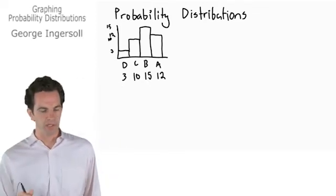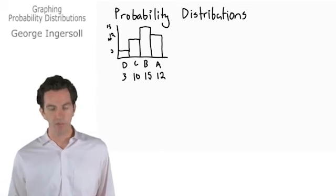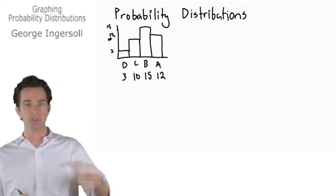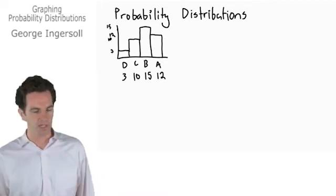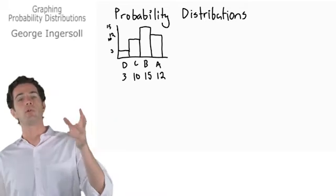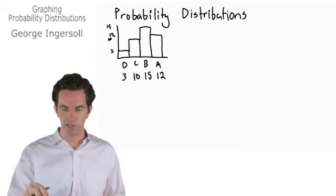For our probability distribution, we wouldn't use the actual numbers that we obtained, we would use the probability. Instead of saying this is exactly how many students received each grade, let's say we just pull a grade out of the list. What's the probability that it's going to be a D, C, B, or an A? We're still using the frequencies, but we're going to show probabilities instead.